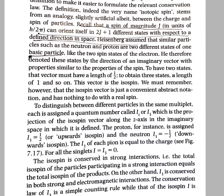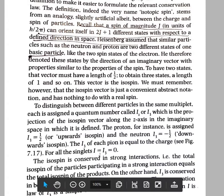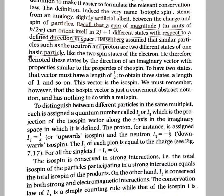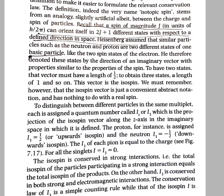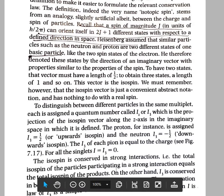Isospin is conserved only in strong interactions, while I3 is conserved in both strong and electromagnetic interactions. This conservation of isospin gives an idea about which type of interaction is taking place in a reaction. We can find out whether a reaction involves a strong, weak, or electromagnetic interaction. The value of IZ is conserved in both strong and electromagnetic interactions, while I is conserved only in strong interactions.